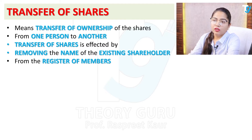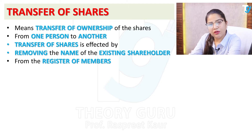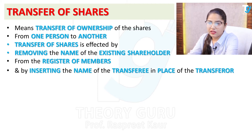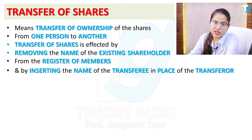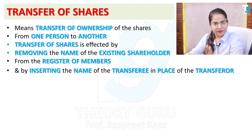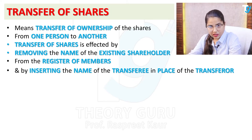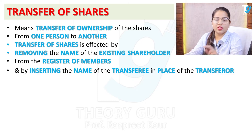When one person gives the shares to another person, the transferor's name is removed from the register, and the name of the transferee is inserted in place of the transferor. To make the difference clear: if I am transferring my shares, I am the transferor, and the person to whom I am transferring my shares is known as the transferee.